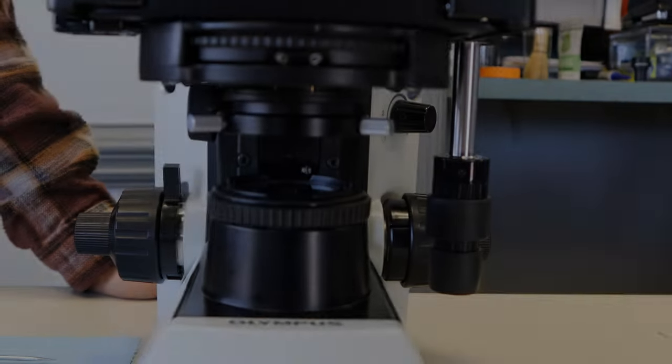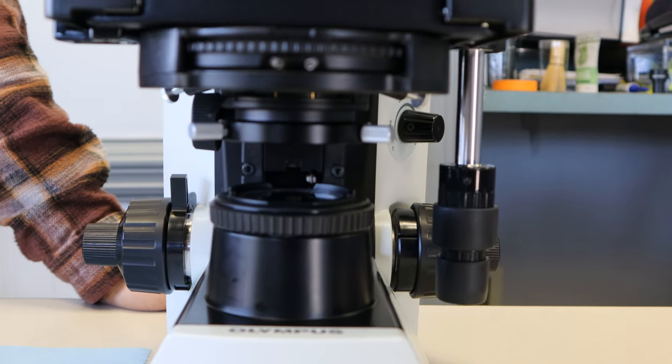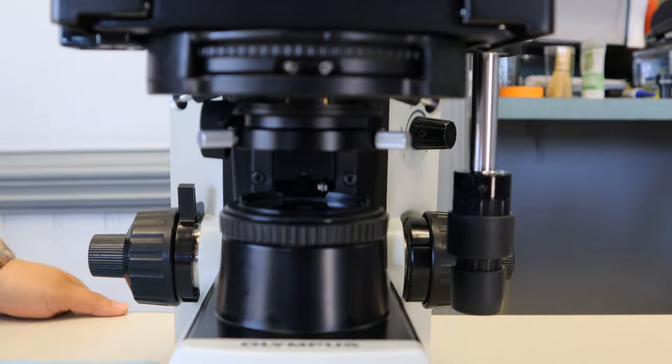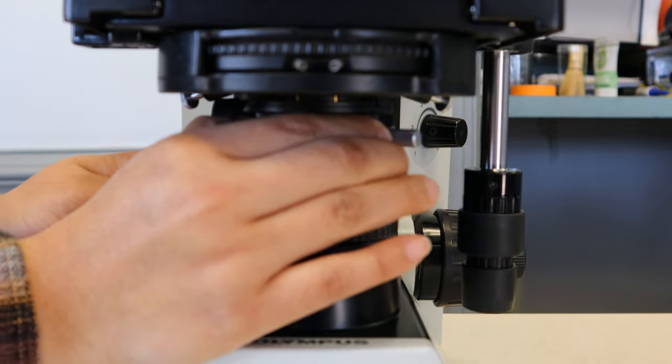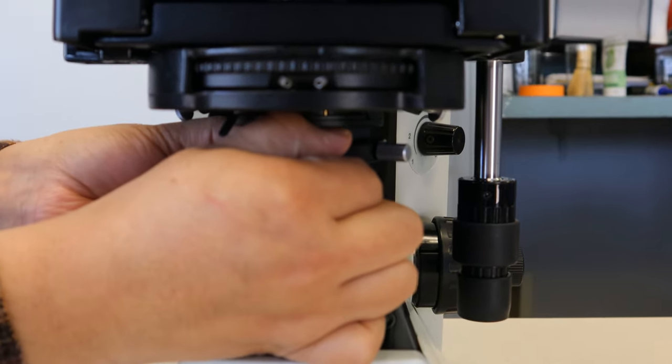To start off, we're going to remove the lower portion of the condenser, the little black ring with the two silver screws. Just give it a little wiggle and it'll pop right out. It's just pressure fit in.